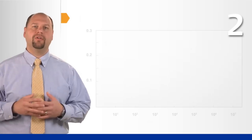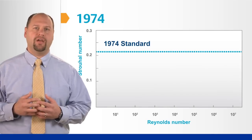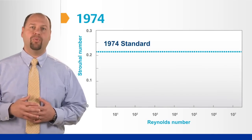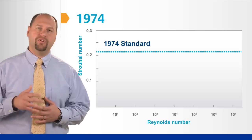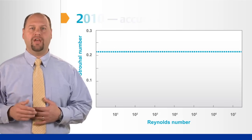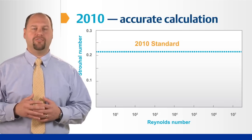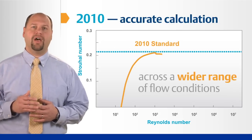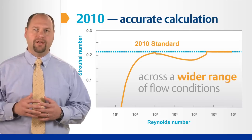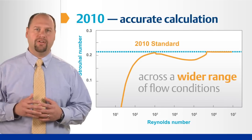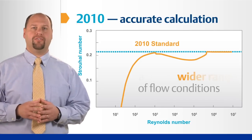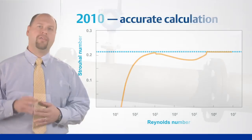Second, the Strouhal number, used to calculate the vortex shedding rate, was a set value of 0.22 in the previous standard. The new standard calculates the Strouhal number. This allows the thermowell design to be better fitted to the process conditions to minimize error and shorten the response time.